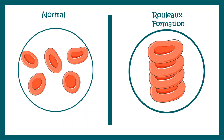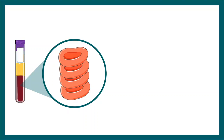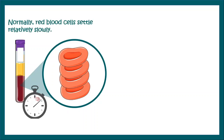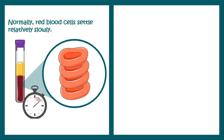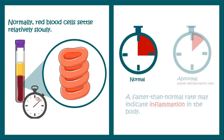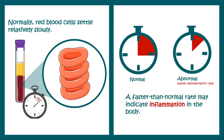This Rouleau formation causes sedimentation of the RBCs over a period of time. Normally the red blood cells settle down relatively slowly. But if the rate becomes abnormally fast, then that indicates an inflammation that is going on in the body.